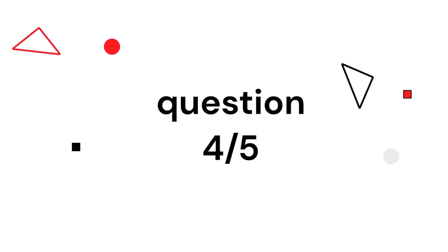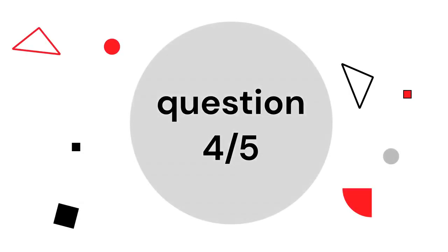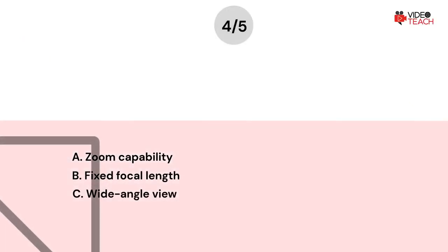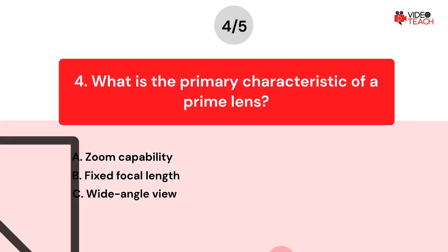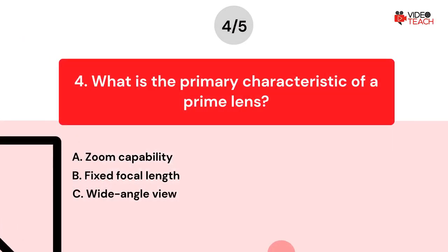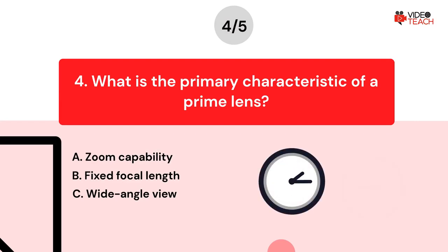Question number four. What is the primary characteristic of a prime lens? Option A: Zoom capability. Option B: Fixed focal length. Option C: Wide angle view. Now you have about 15 seconds to think about your answer.